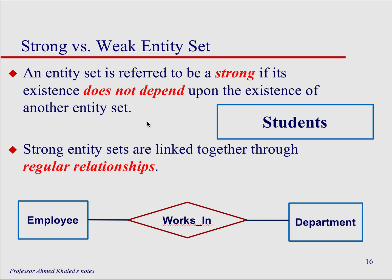Let's talk about strong versus weak entities. A strong entity is what we've been discussing until now — you have the entity in a rectangle and it doesn't depend on another entity. For example, students, employees, and departments. Employees work in departments. These entities don't depend on anything else; they're linked through regular relationships.